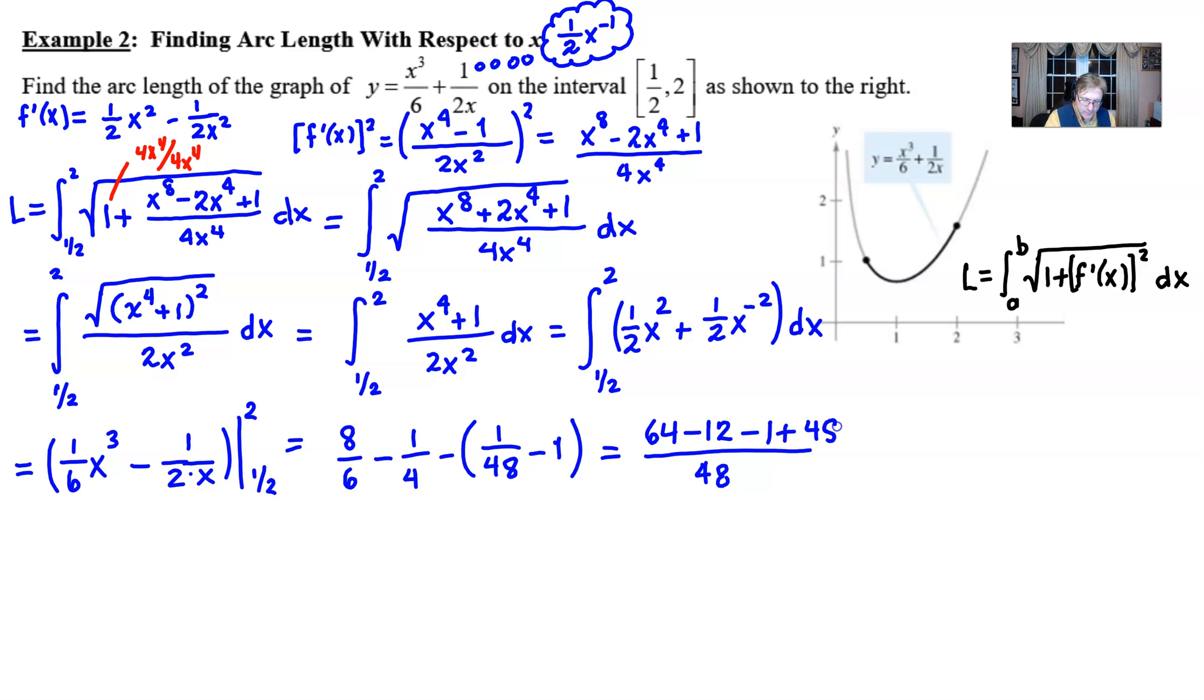If we add everything together 64 minus 12 that's 52, 52 minus 1 more is 51, 51 and 48 is 99 over 48 and I believe that you could cancel out a 3 and get 33 over 16.